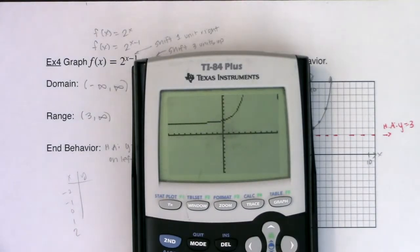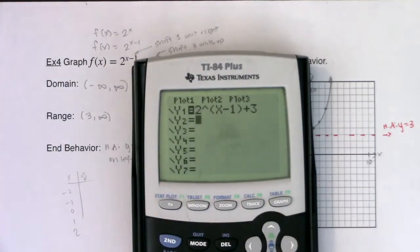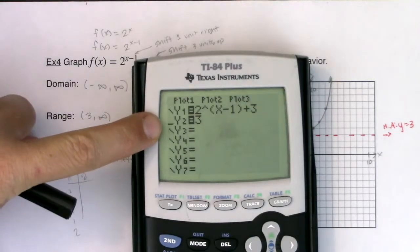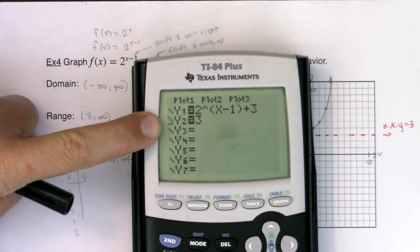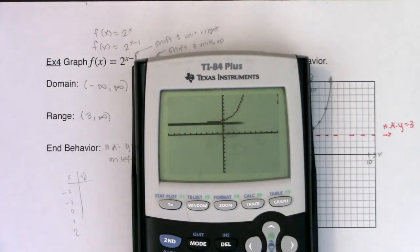And let me hit zoom 6 just to make sure that this matches what I have on my paper. And it does, right? I see that exponential growth and I see it's been shifted up 3 units. And if you wanted to check that out, you could write the line y equals 3 in here. I usually like to make my asymptotes thick, so I scroll to the left of that equal sign and hit enter.